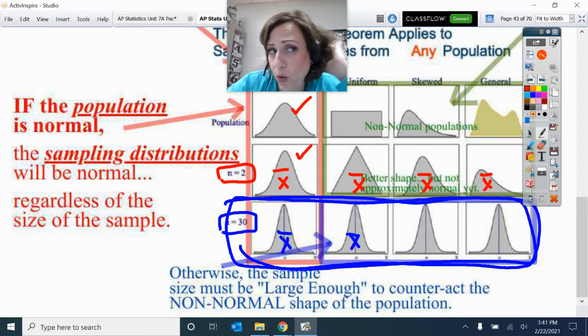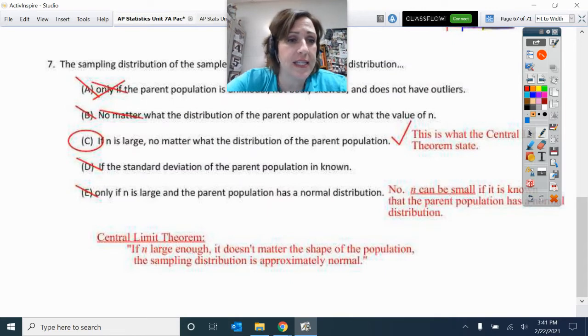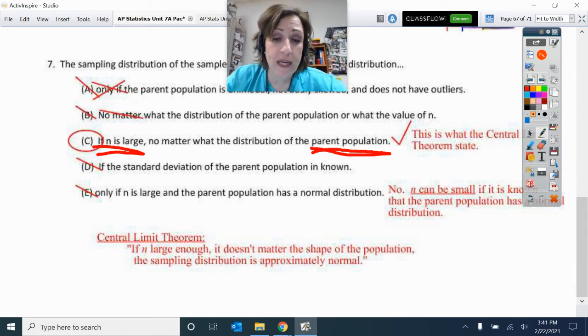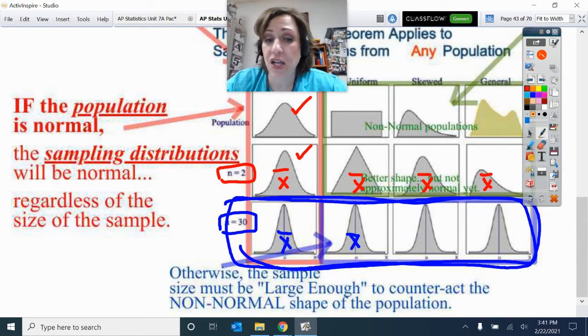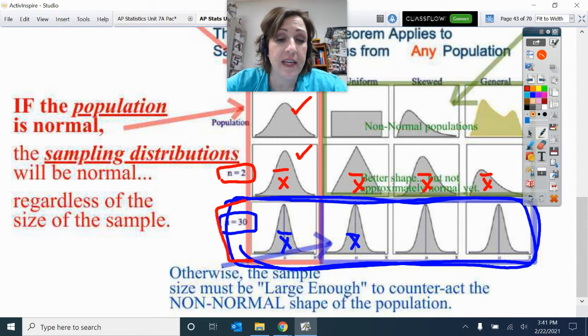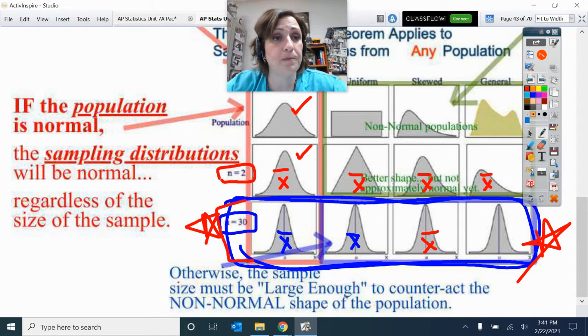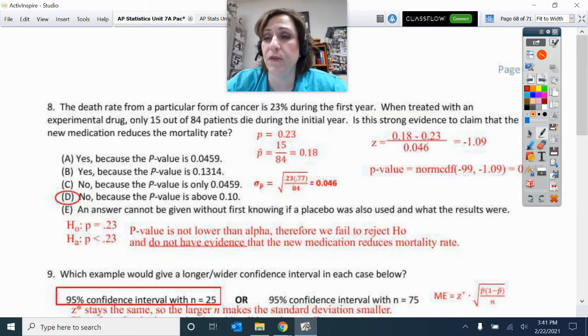So in summary, what it says here is, if n is large enough, it does not matter the shape of the population. That sampling distribution will be approximately normal. If n is large enough, then it doesn't matter the shape of the population. The sampling distribution is approximately normal. Moving on, number 8.